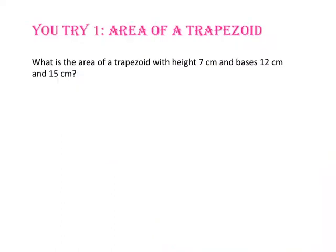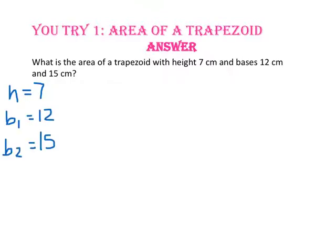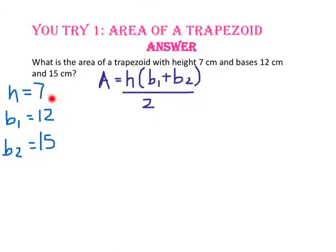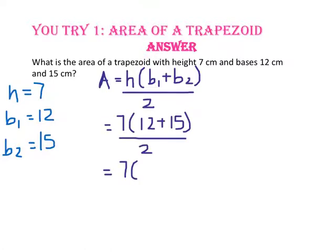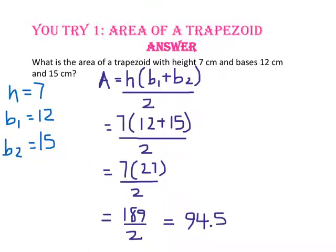Pause the video and do You Try number 1. What is the area of a trapezoid with height 7 centimeters and bases 12 centimeters and 15 centimeters? Starting with the formula — half the height times the sum of the bases — substitute 7 for h, and 12 and 15 for the bases. 12 plus 15 is 27, so 7 times 27 divided by 2. 7 times 27 is 189, divided by 2. The area of this trapezoid is 94.5 centimeters squared.